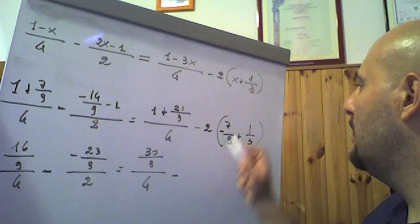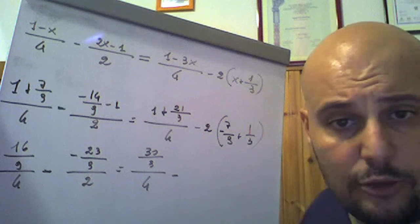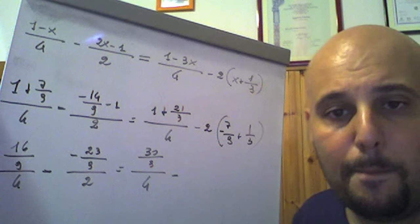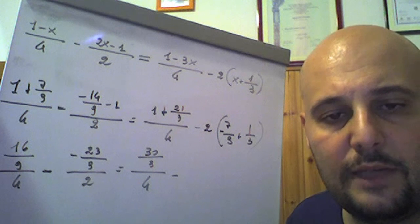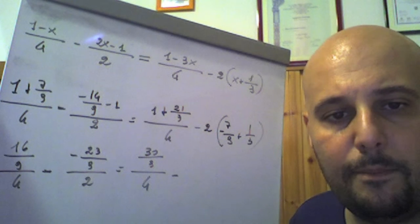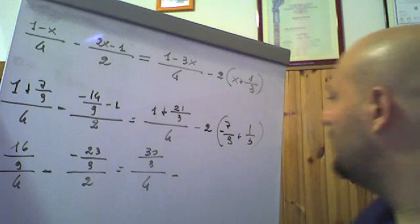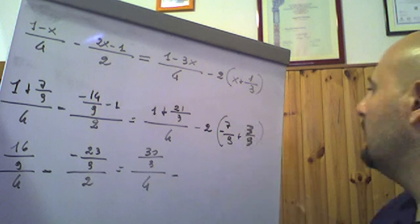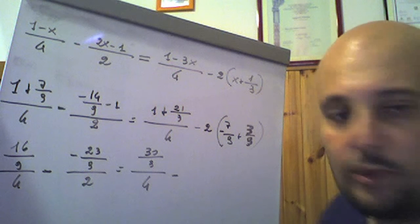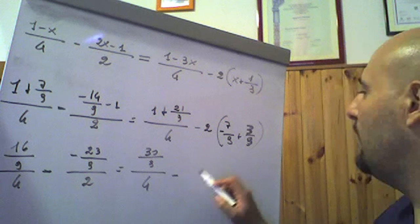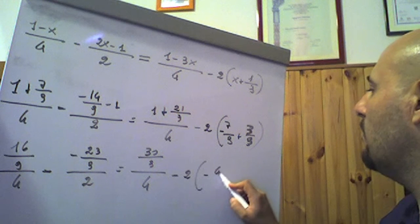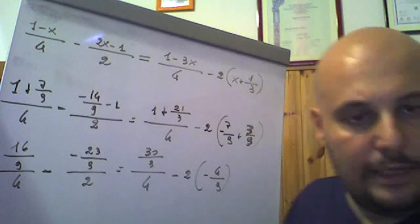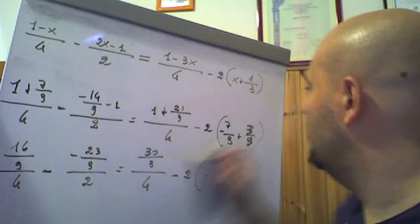For the last term: −2·(−7/9 + 1/3) = −2·(−7/9 + 3/9) = −2·(−4/9) = 8/9. Now finding the common denominator 36 for the left side: 16/36 + 23/18 = 16/36 + 46/36. For the right: 10/12 + 8/9, using LCM 36: 10/12 = 30/36, 8/9 = 32/36.